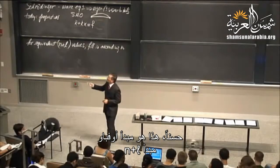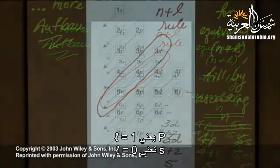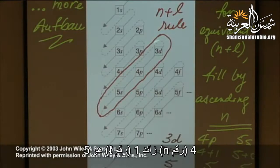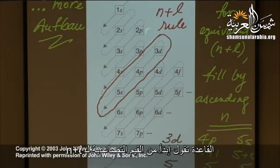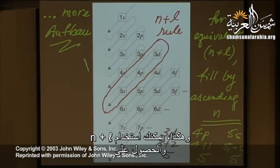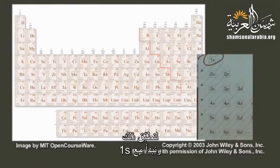Here's an example with the n+l rule: for 3d, d means l=2, so n+l = 5; for 4p, l=1, n+l = 5; for 5s, l=0, n+l = 5. Go in order of ascending n+l, and snake your way through to get the filling sequence for the whole periodic table.